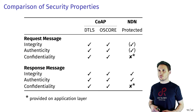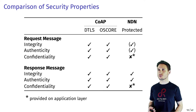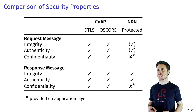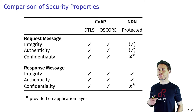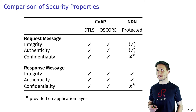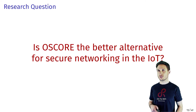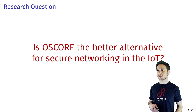All considered deployment options show similar security properties. CoAP over DTLS and CoAP with OSCORE provide integrity, authenticity, and confidentiality for request as well as response messages. NDN delegates the encryption of application data to the application itself; integrity and authenticity are provided for response messages, and with the latest development version, also for request messages. For our comparative evaluations, we followed the research question whether OSCORE is the better alternative for secure networking in the IoT.